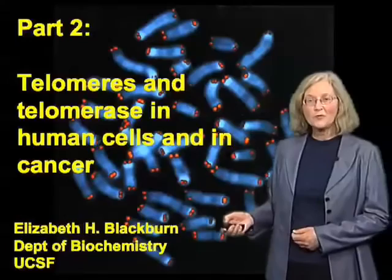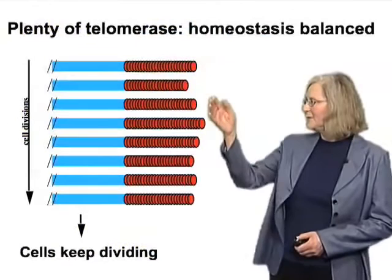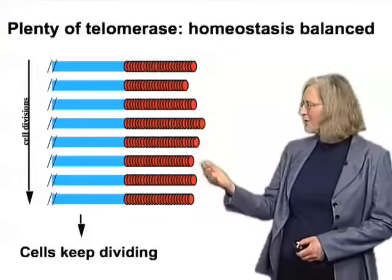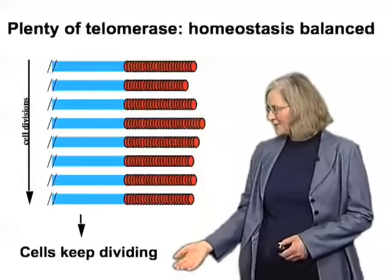You may recall from the first lecture that the function of telomerase is to maintain the telomeres and prevent them from shortening as cells divide, because telomere shortening would otherwise occur in the absence of telomerase to compensate for the shortening processes. Maintaining telomeres allows the cells to keep on dividing.